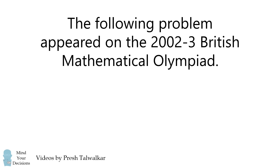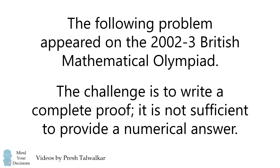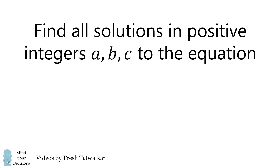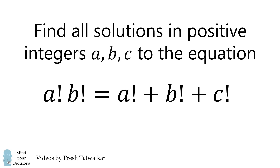Mind your decisions. I'm Presh Talwalkar. The following problem appeared on the 2002 to 2003 British Mathematical Olympiad. The challenge is to write a complete proof — it is not sufficient to provide a numerical answer alone. Find all solutions in positive integers a, b, and c to the equation: a factorial multiplied by b factorial equals a factorial plus b factorial plus c factorial.